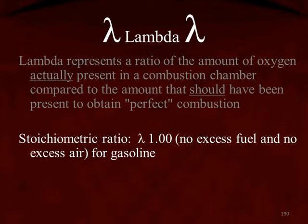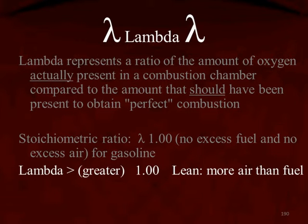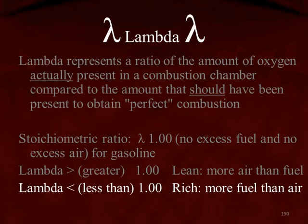At the stoichiometric ratio, lambda would be 1.0, meaning there's no extra fuel and no extra air — and this applies only to gasoline. A lambda value greater than one means there's more air than fuel, which is a lean mixture. A lambda value less than one means we have more fuel than air, which is a rich mixture.